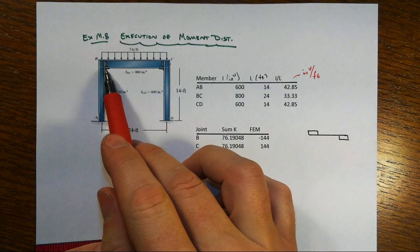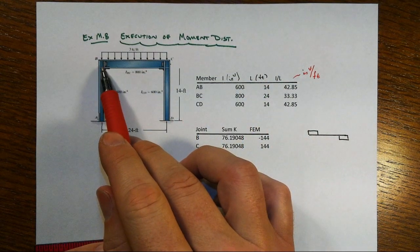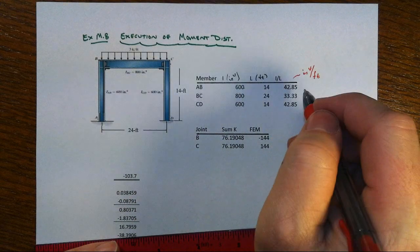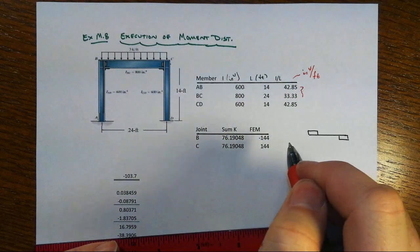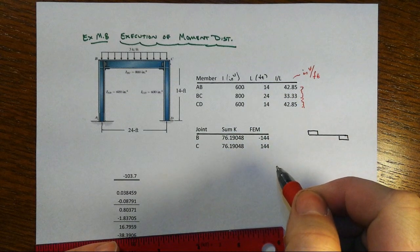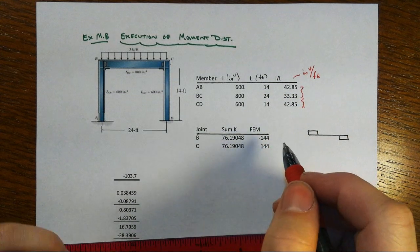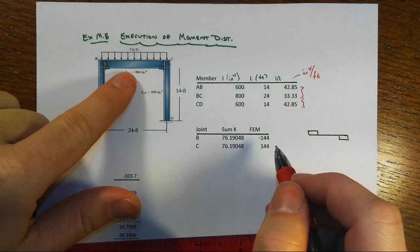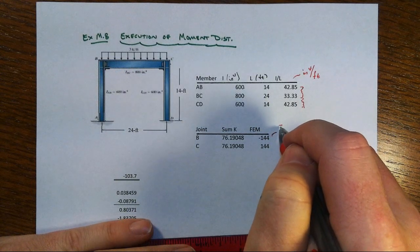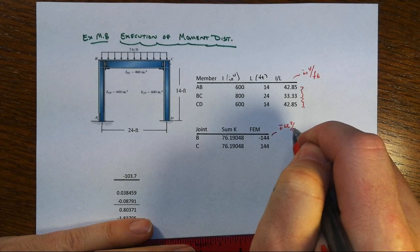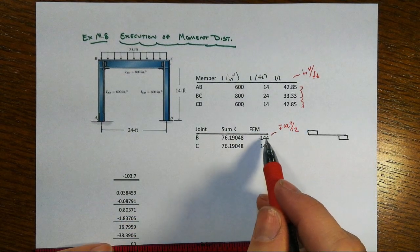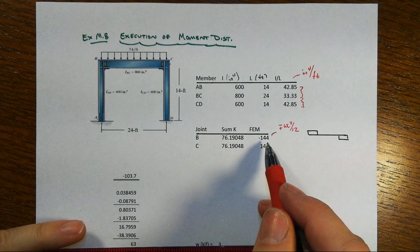If we summed all the I over L's of the members that frame into the joint, there's only two of those. If we sum those at joint B, we get the sum of these two, and that turns out to be the same thing at joint C. We're going to get a fixed end moment associated with the beam, which comes from plus and minus WL squared over 12 for that fixed end moment.